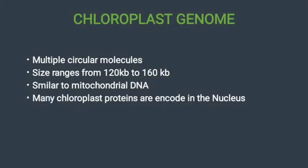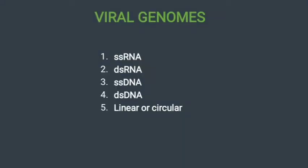Next we see the chloroplast genome. Chloroplast genomes are multiple circular molecules, with a size range from 120 kb to 160 kb. Similar to mitochondrial DNA, many chloroplast proteins are encoded in the nucleus.